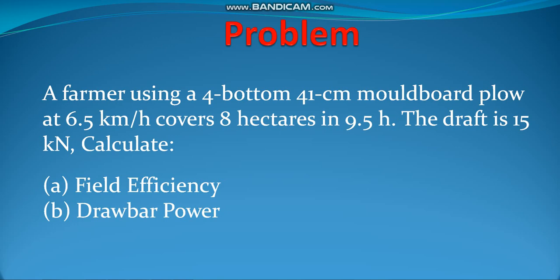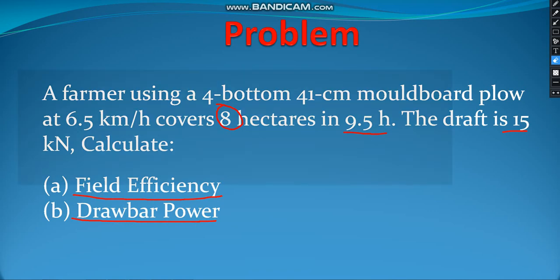Hello friends! We will start one problem from Farm Machinery. This is the first problem on Field Efficiency and Drawbar Power. The problem says: a farmer using a 4-bottom moldboard plow at 6.5 km per hour covers 8 hectares in 9.5 hours. The draft is 15 kN. We have to calculate Field Efficiency and Drawbar Power. It's a very simple problem, so let's start.